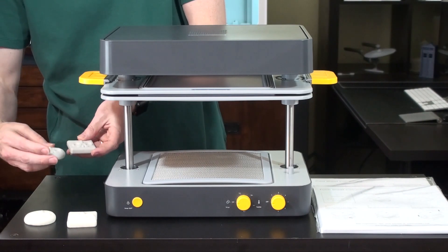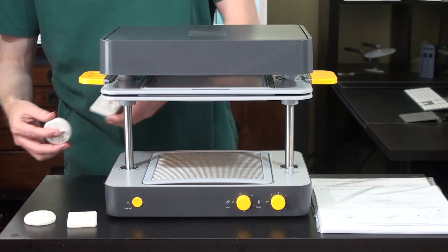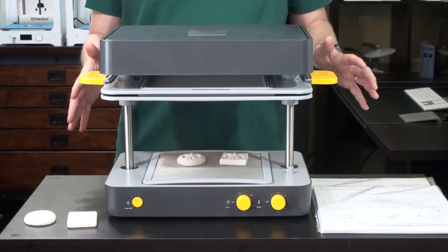A vacuum former lets you take 3D objects like for example some of these soap molds that we 3D printed on an Ultimaker 3D printer. You can take those and put them on the bed here and then using the vacuum suction it will create a mold around those objects for you or a form around those objects.